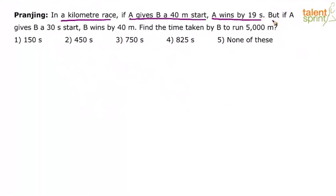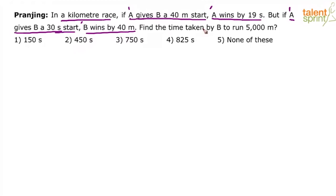Then there is one more situation. If A gives B a 30 second start, B wins by 40 meters. So basically we have to find out the time that B takes to cover a distance of 5000 meters.